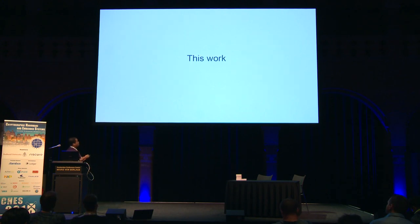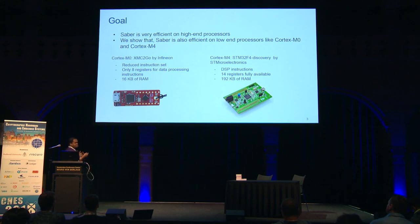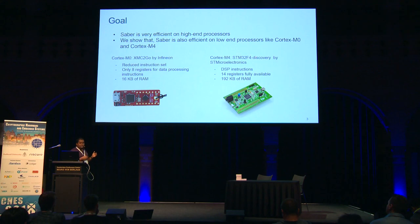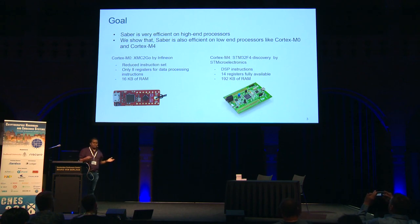In this work, we show that Saber is very efficient not only on high-end processors but also on low-end resource-constrained platforms like Cortex-M0 and M4. Our two target devices are the M0, which is a very low-power microcontroller with only 8 or 16 KB of RAM and 8 registers for data processing, and the Cortex-M4, which sits in the middle of the Cortex-M series and is the first processor in the series to have DSP instructions. We'll show how we can utilize these DSP instructions to our benefit.